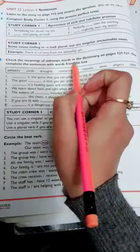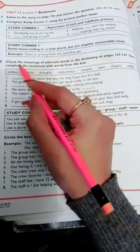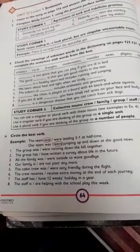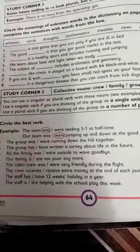Check the meanings of the unknown words in the dictionary on pages 121 to 127, then complete the sentences with the words from the box. They have given you a few vocabulary words. You are going to look for their meanings at the end of your book, but here I am going to explain these meanings.